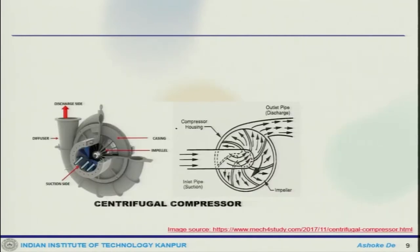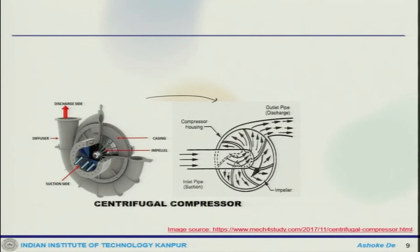This is an image of a centrifugal compressor that gives you an idea of how it looks. This is the inlet side where the flow comes in. This is another schematic showing how the fluid comes in here, goes through the impeller — these are the impeller blades — and finally goes out radially. This is the discharge side and the different components.